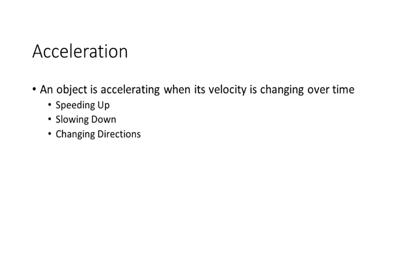Something is accelerating when its velocity is changing over time. The key thing here is velocity changing. Now there are three ways you could be accelerating: speeding up, slowing down, or changing directions. Typically we only think of speeding up as being acceleration, but the other two are also changes in velocity. We're going to save the changing direction bit for a later unit. Today we're going to focus on speeding up and slowing down.